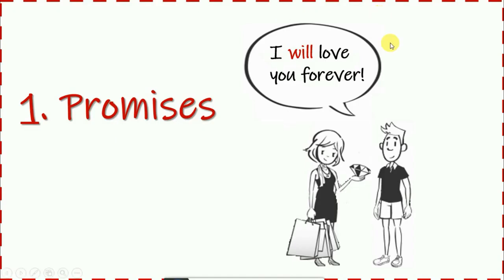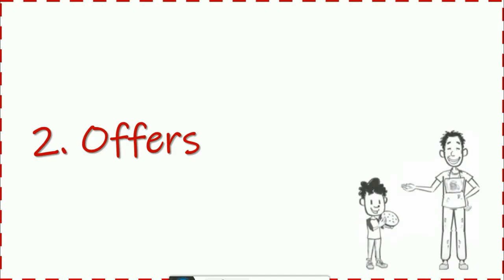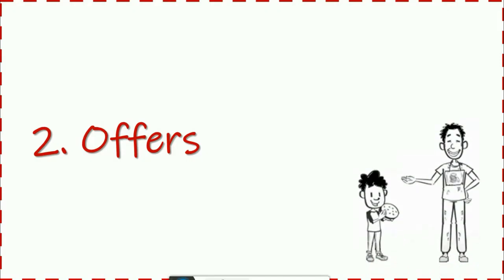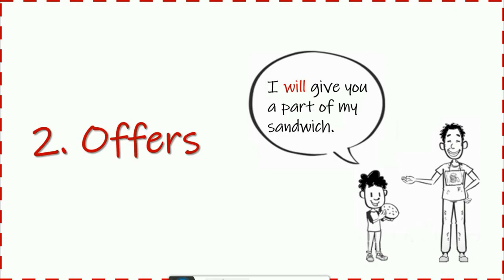We call this sentence a promise. So the first use of the verb 'will' is with promises. The second use of the verb 'will' is with offers. In this picture, we have a boy with his father. The boy offers a part of his sandwich to his father and says: 'I will give you a part of my sandwich.' He is offering something, and this is the second use of 'will.'